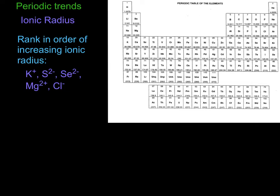a potassium cation is going to be smaller than the potassium atom, but the potassium anion is going to be larger than the potassium atom. Same goes for sulfur. The anion will be larger than the atom. Selenium, all of those follow that rule, and the magnesium cation will be smaller than magnesium.